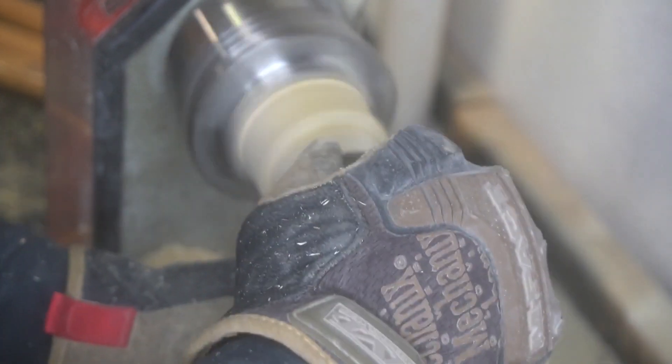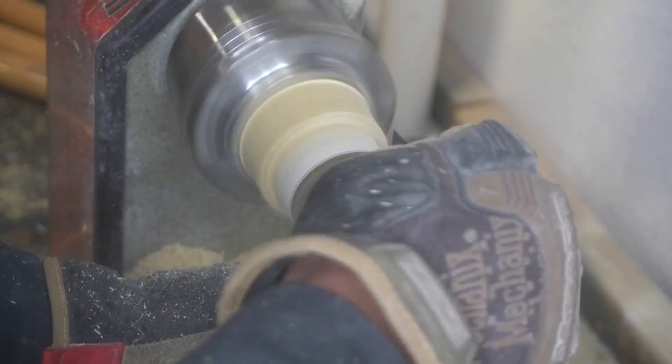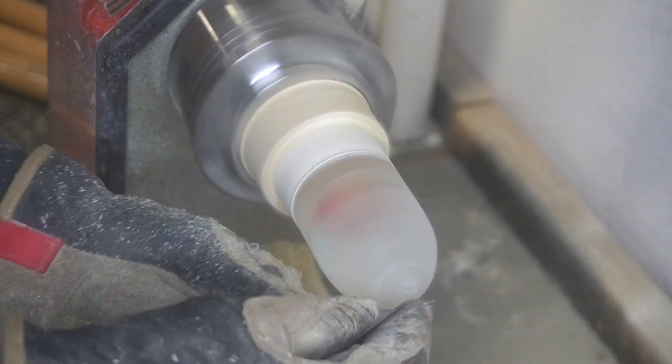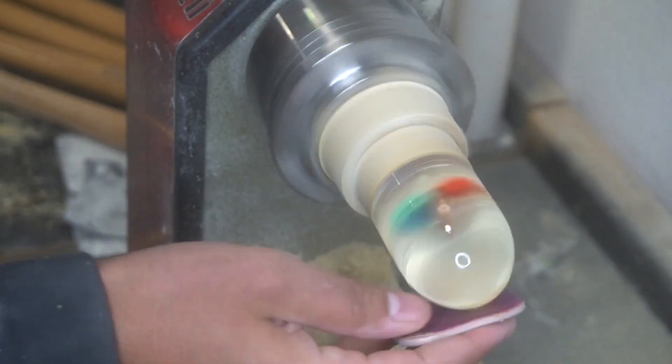Going from 340 to 1500 grit, all the way up to the micro mesh up to 1500. More sanding - I don't want to bore you with the sanding.